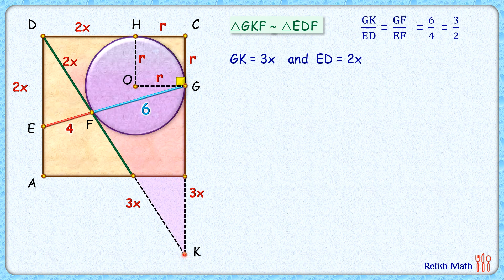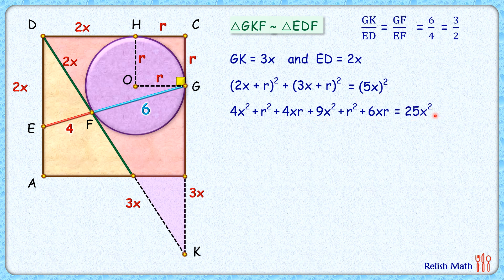Now if you look at this big triangle CKD, applying Pythagorean theorem we get (2x + r)² + (3x + r)² equals hypotenuse squared, which is (2x + 3x)² or (5x)². Simplifying, let's open the brackets applying (a + b)² formula. So we get this first term, let's expand the second term, and that's the right-hand side, 25x². Now let's take everything on one side.